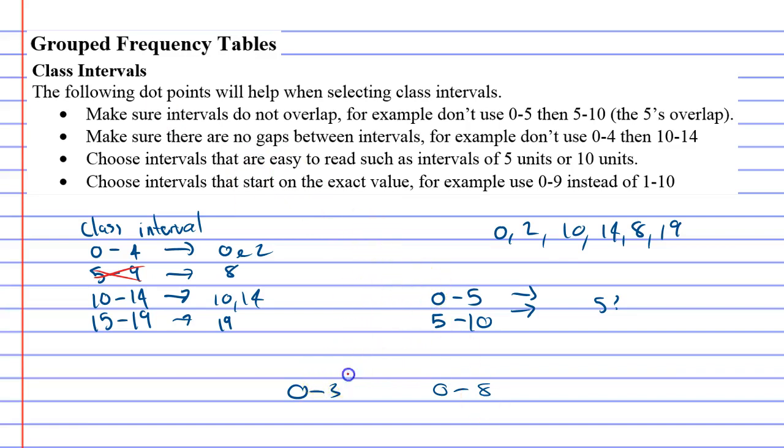The fourth step says choose intervals that start on the exact value. For example, use 0 to 9 instead of 1 to 10. So they prefer you to start on 0 rather than the 1.